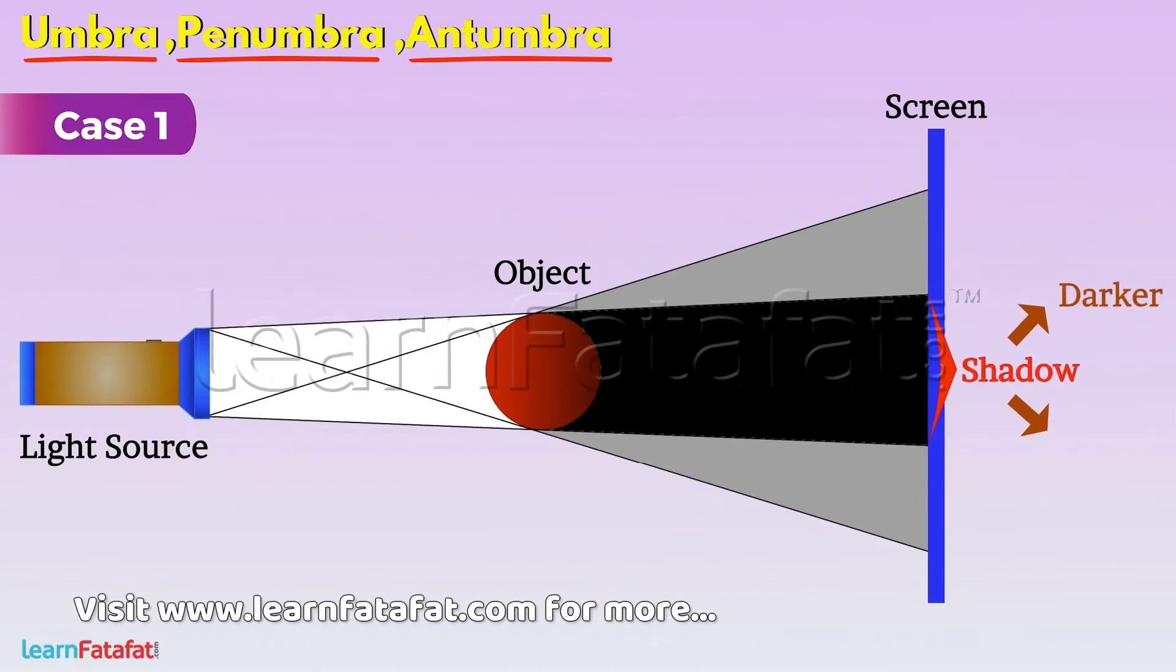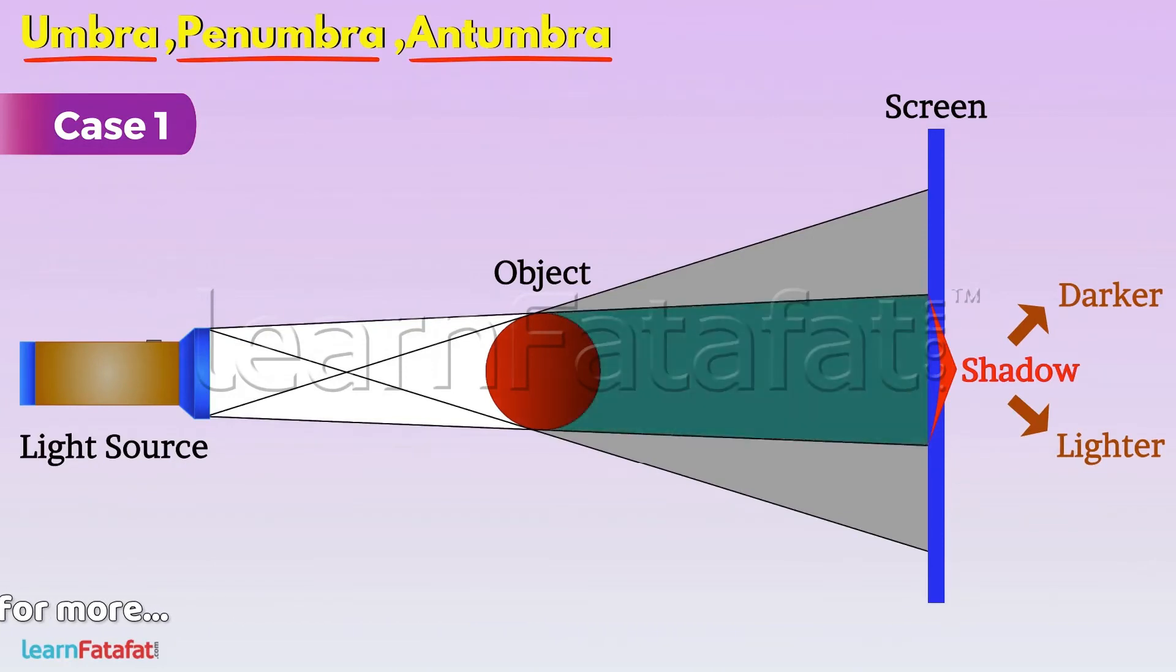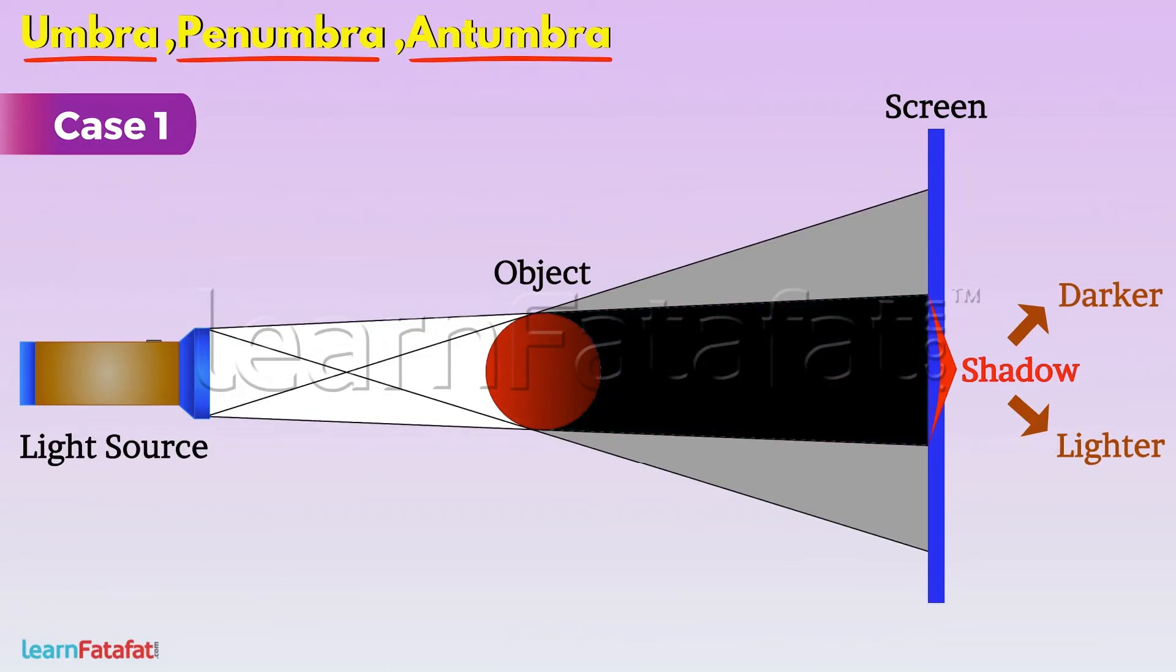There are two parts of this shadow, a darker part and a lighter part. The darker part of shadow is called as Umbra and the lighter part present around the Umbra is called as a Penumbra.